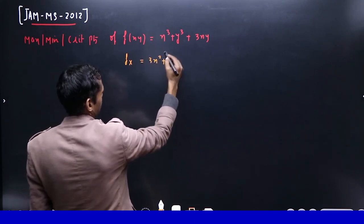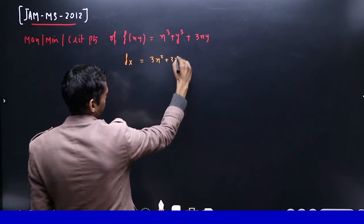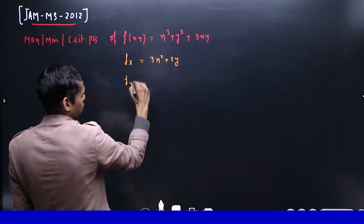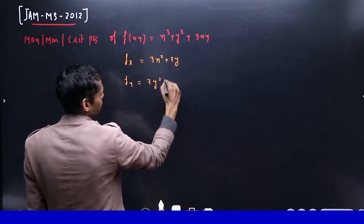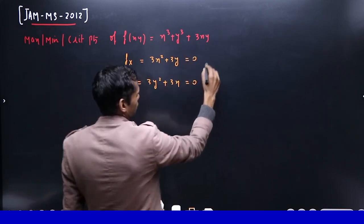Look, 3x². Okay? What is fy? 3y². This is what we are doing. When we equate this to zero, we are seeing things without a pair.